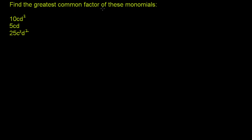Find the greatest common factor of these monomials. When they say monomials, that's just a fancy word for saying a one-term expression — each of these obviously have only one term in them. To find the greatest common factor of these, I like to break up each of these terms into their constituent parts, making them a product of the simplest things possible.